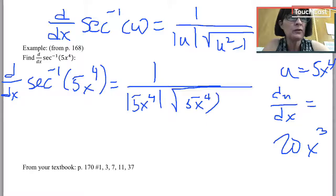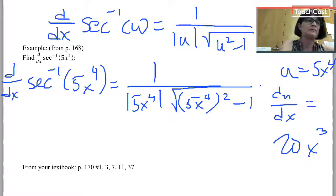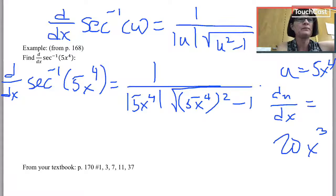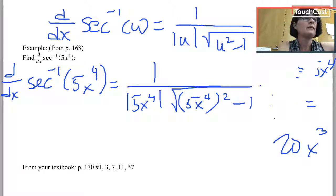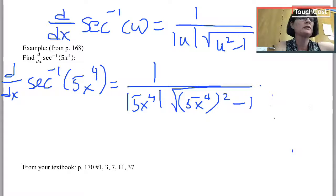5x to the 4th squared minus 1 times, I didn't give myself enough room, du dx, which we just said was 20x cubed.